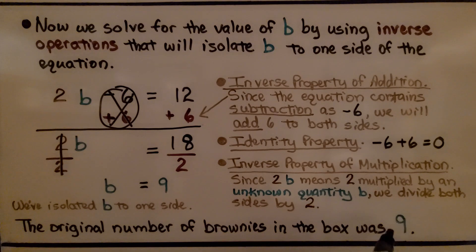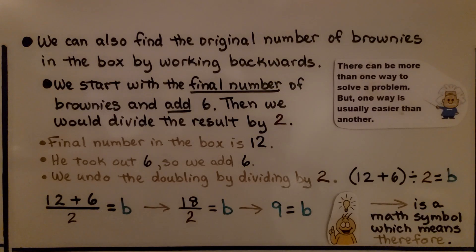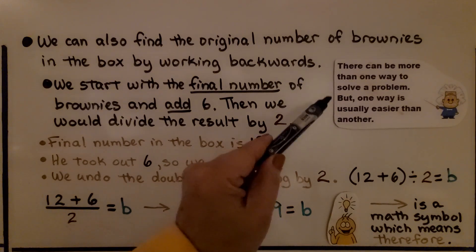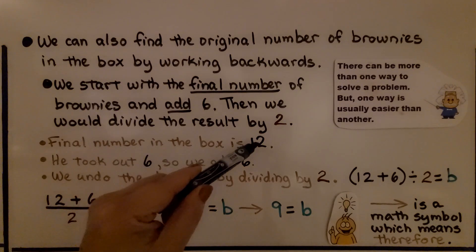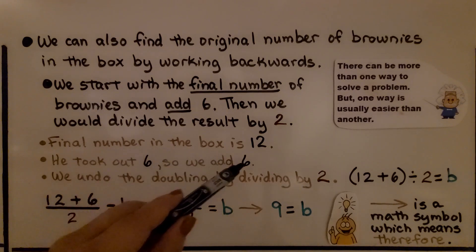There were 9 brownies in the box. He doubled it, had 18, then couldn't close the lid. So he took 6 back out, then he could close the lid. Then there were 12 brownies in the box. We can also find the original number of brownies in the box by working backwards. We start with the final number of brownies and add 6. Then we would divide the result by 2. If you've watched my channel for a while, you know I always say there can be more than one way to solve a problem, but one way is usually easier than another. We would start with the final number in the box, which is 12. He took out 6, so we would add 6.